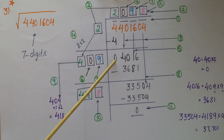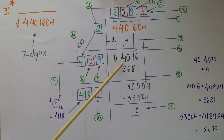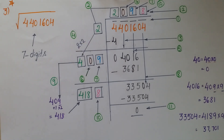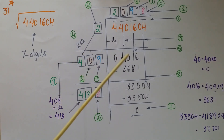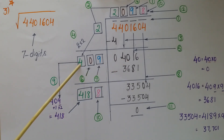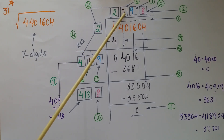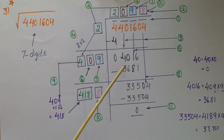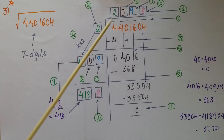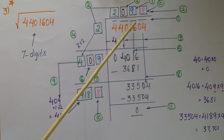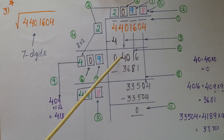Subtract 4 from 4 to get 0, then bring down the next digits 40. Double the divisor: 2×2 = 4, write 4 as the new divisor base. Since the remainder so far is 40 and we need a digit such that the product is ≤ 40, assume 0: 40 × 0 = 0. Write 0 in both the divisor and quotient, then bring down the next bar digits 16, making the number 4016.